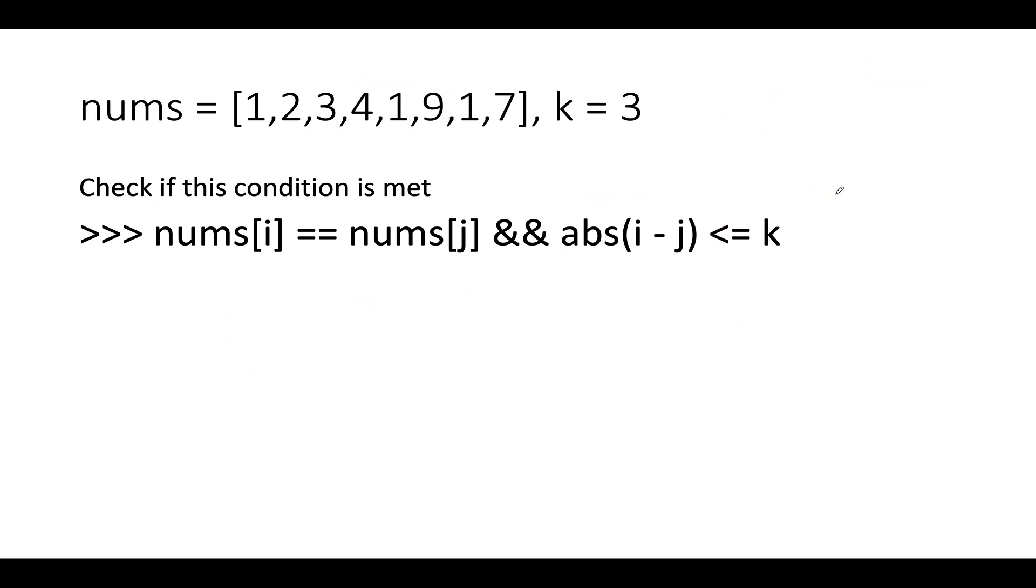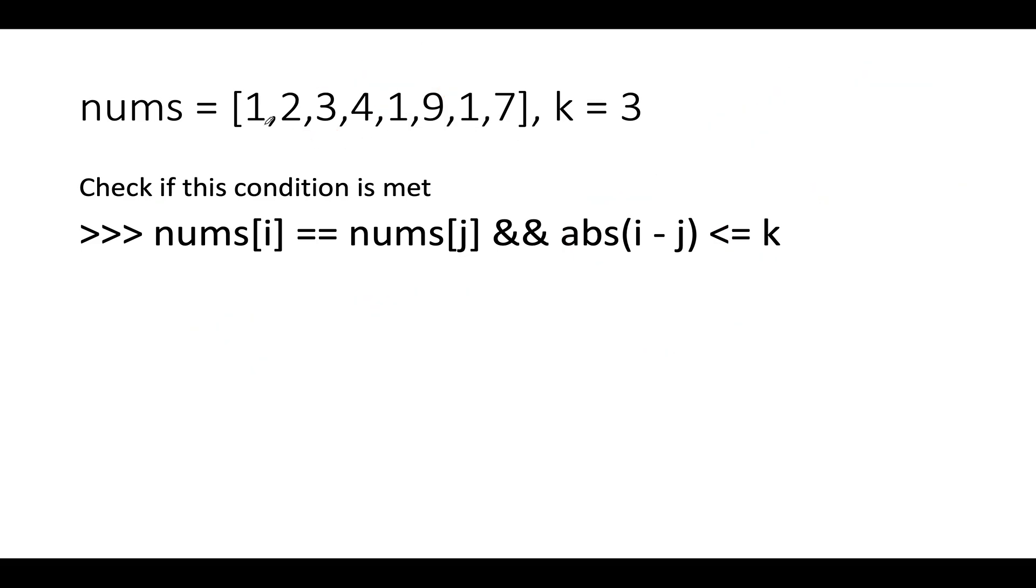Let's take one another case so that you guys get a good hold of the underlying concept. Let me just write indexes 0, 1, 2, 3, 4, 5, 6, 7. And let's start the iteration. The first element is 1, let's add 1 at 0th index. The next element is 2, let's add 2 at 1st index.